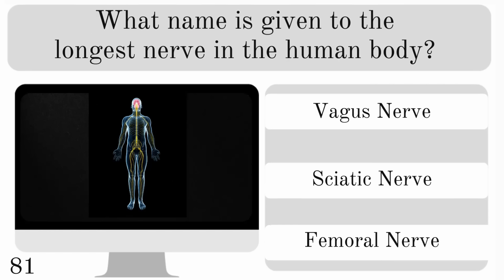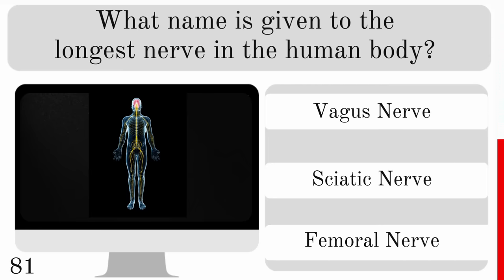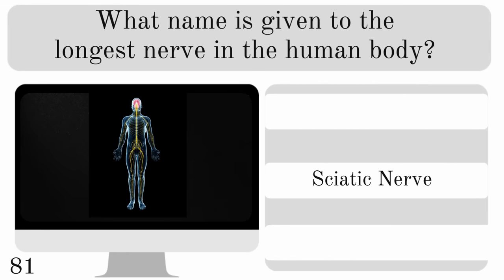What name is given to the longest nerve in the human body? Is it the vagus, sciatic or femoral nerve? The answer is the sciatic nerve.